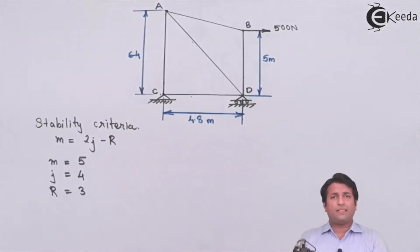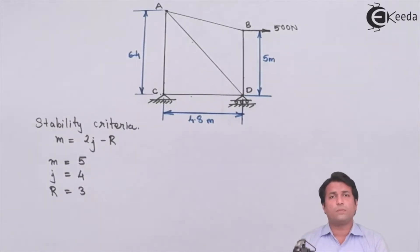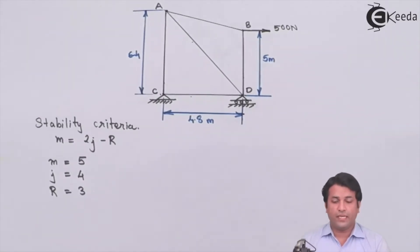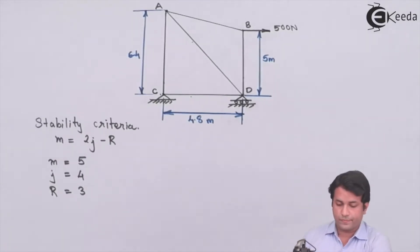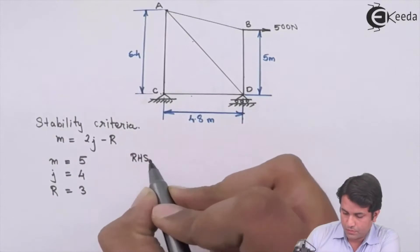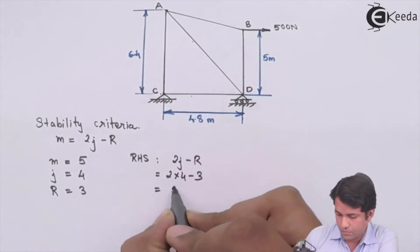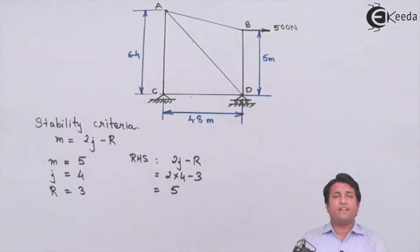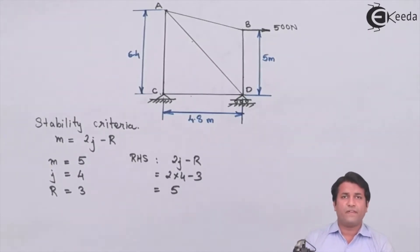R equals 3 because we have a hinge support and a roller support. For the hinge support we have two support reactions and for the roller support we have one reaction, so the total number of reactions is three. Putting these values into the equation, the right-hand side is five and the left-hand side is also five, so the truss is perfectly stable.